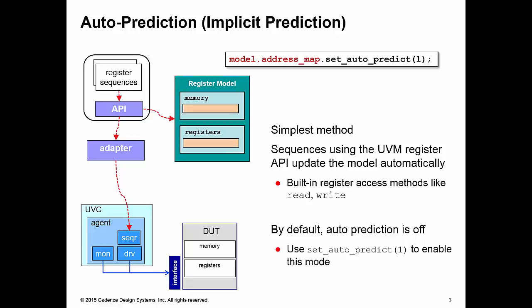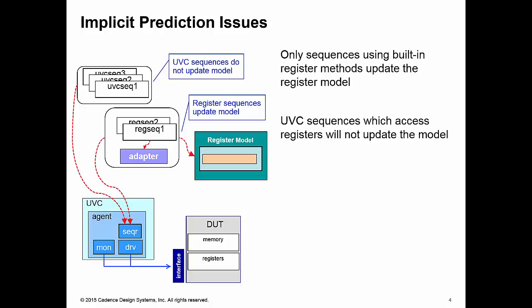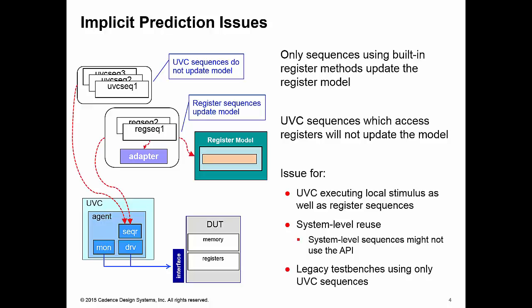Now, the obvious problem with auto prediction is that only the sequences that use the UVM register API, the built-in register methods like read and write, only these sequences are going to be updating your register model. If you have UVC sequences, native sequences of your UVC that also access the registers of your DUT, these will not be used to update the model. They'll not keep the model up to date. So this is going to be an issue.